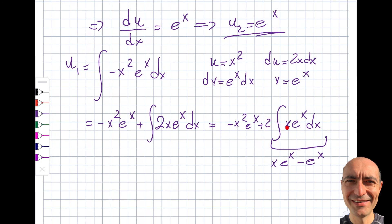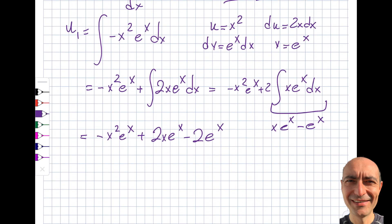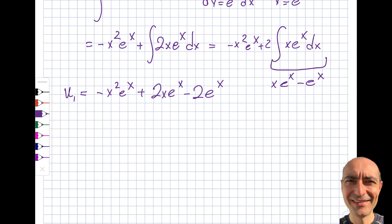Continuing: with u = x, du = dx, dv = eˣdx, v = eˣ — plugging in gives xeˣ - eˣ. So u₁ = -x²eˣ + 2(xeˣ - eˣ) = -x²eˣ + 2xeˣ - 2eˣ. We can factor eˣ if we choose, but that's essentially u₁.